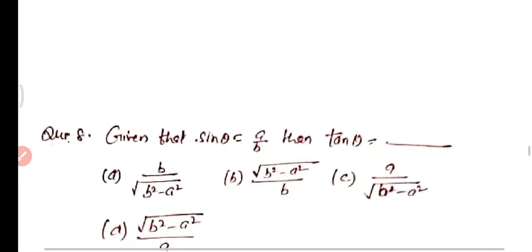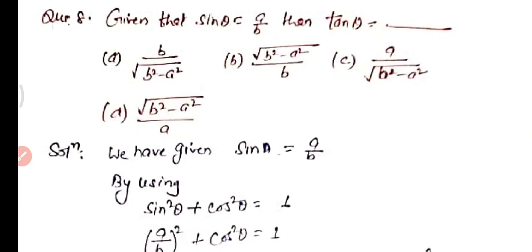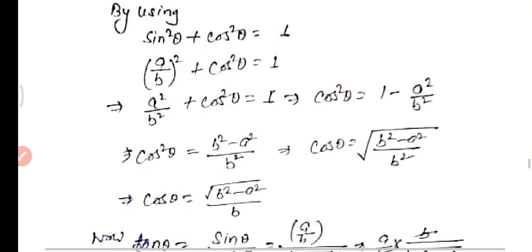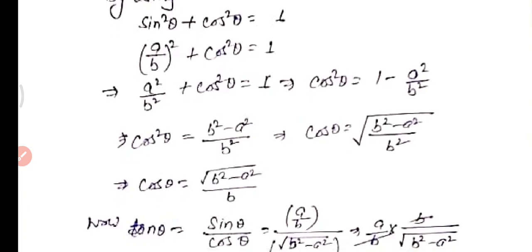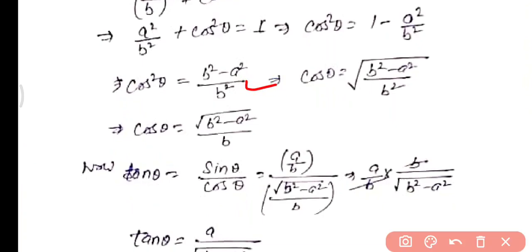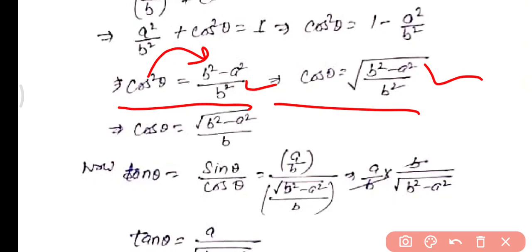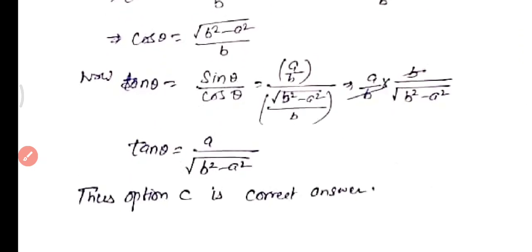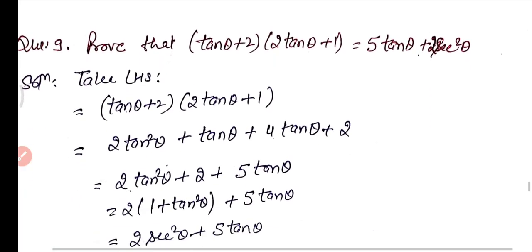Question 8: Given sin θ = a/b, find tan θ. Using sin²θ + cos²θ = 1: (a/b)² + cos²θ = 1 → cos²θ = 1 − a²/b² = (b² − a²)/b². So cos θ = √(b² − a²)/b. Therefore tan θ = sin θ / cos θ = (a/b) / (√(b² − a²)/b) = a / √(b² − a²). Option C is the correct answer.